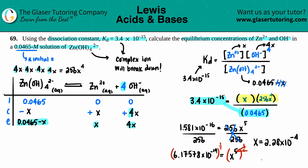Now let's check the 5% rule: take the x value, divide by the initial concentration 0.0465, and multiply by 100. If the result is 5% or less, our assumption was valid. If not, we'd have to use the quadratic. Dividing 2.28×10⁻⁴ by 0.0465 times 100 gives about 0.5% — well under 5%, so our assumption holds. The unit for x is molarity.